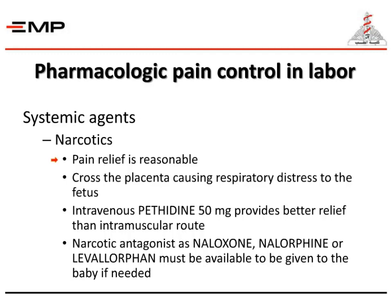Intravenous or intramuscular pethidine 50 mg provides better relief than the intramuscular route alone. Narcotic antagonist naloxone should be available to be given to the baby if needed for respiratory depression.